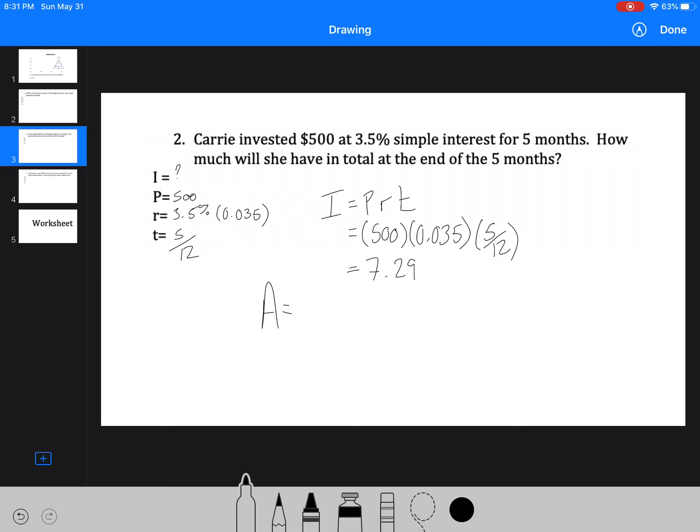The amount that she has at the end, though, is our initial 500 plus that 7.29. So she has $507.29. Put it there for a statement, and away you go.